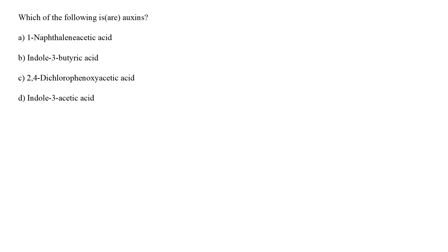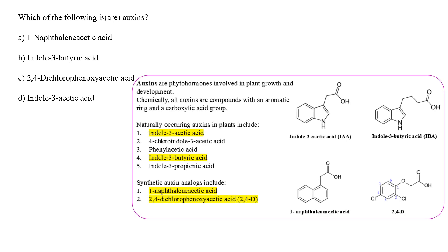Let's begin. Question 1 is, which of the following are auxins? Auxins are phyto-hormones that are involved in plant growth and development. Auxins are chemically compounds which have an aromatic ring and a carboxylic acid group. There can be naturally occurring auxins or there can be synthetic auxin analogues. The option A and option C, i.e. 1-naphthalene acetic acid and 2-4-dichlorofenoxyacetic acid are examples of synthetic auxin analogues.